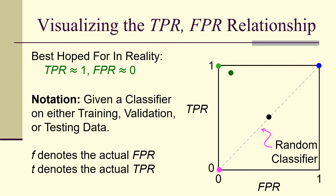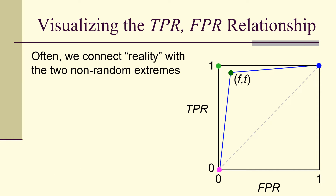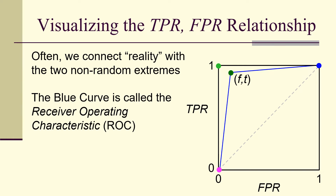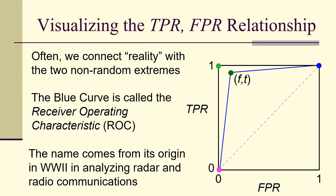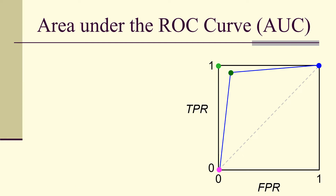Using notation where f is the false positive rate and t is the true positive rate, we have a point (f, t) close to but not exactly at the ideal. We connect the corners of the random classifier line to form a curve — going from the origin through the point (f, t) up to (1, 1). This curve is called the receiver operating characteristic. The name originates from World War II and its use in analyzing radar and radio communications.